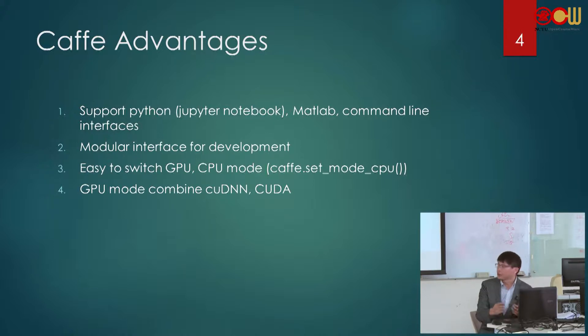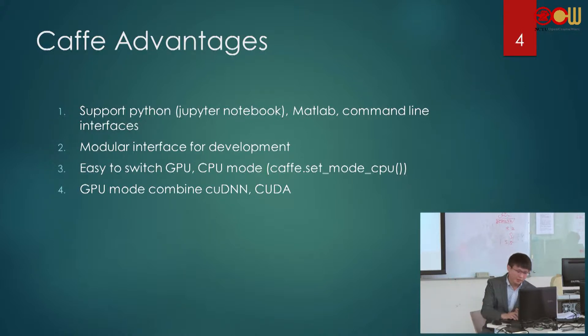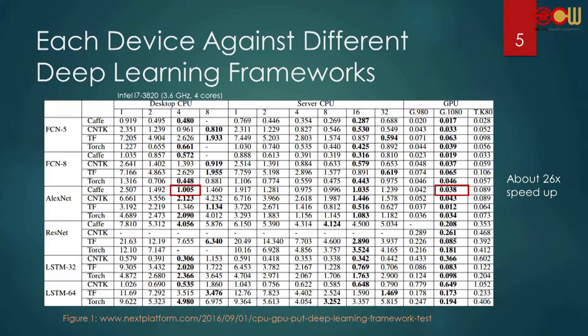I'm talking about GPU much more than CPU, so why? Here is a table to explain how much faster GPU is than CPU. The results are based on time per mini-batch in seconds — the lower the value, the less time it takes.